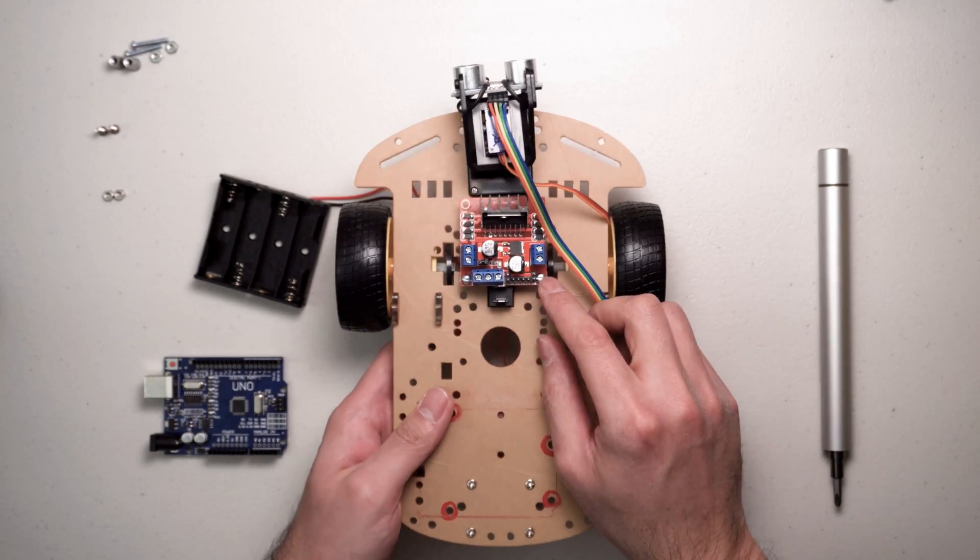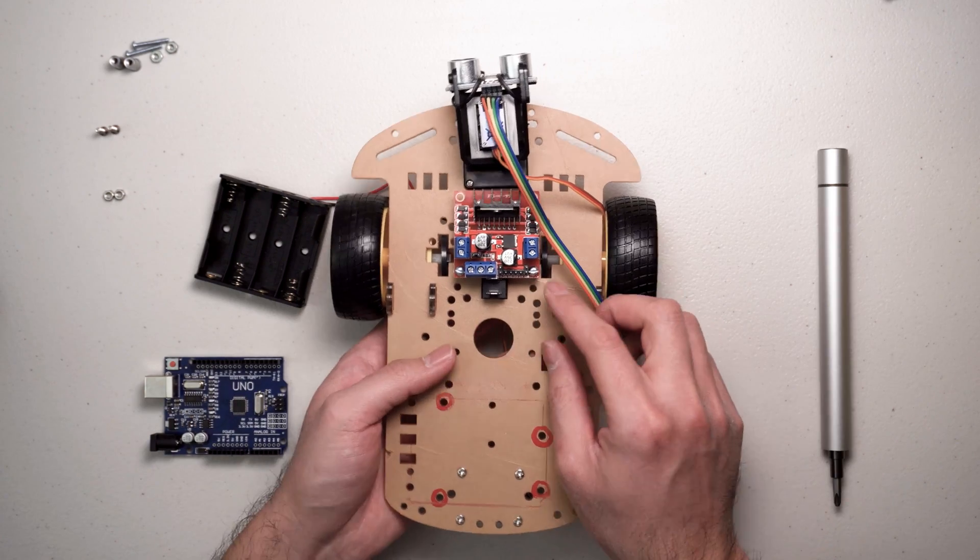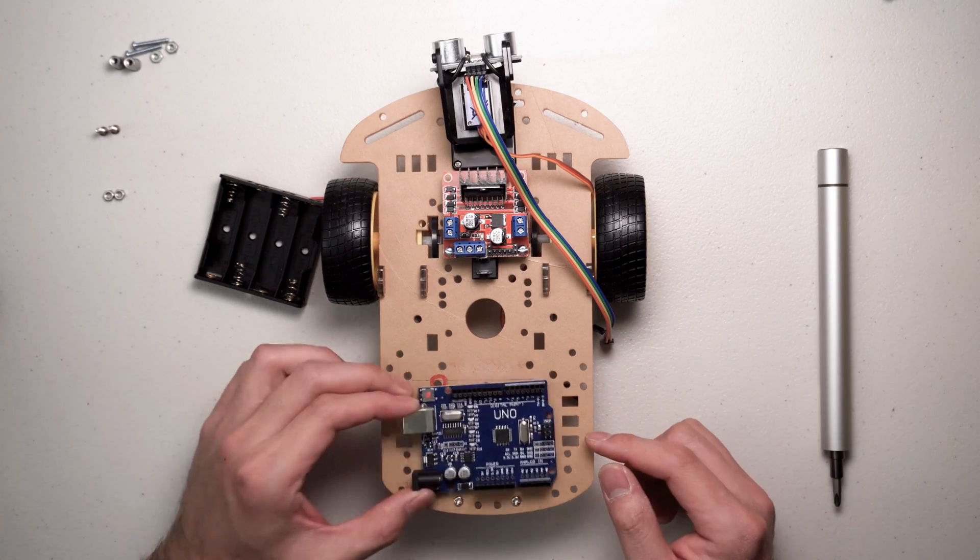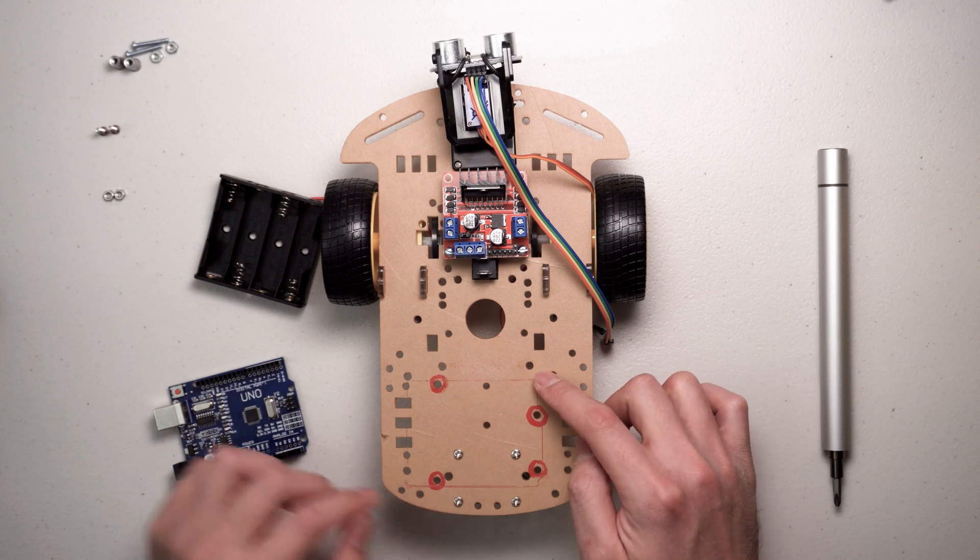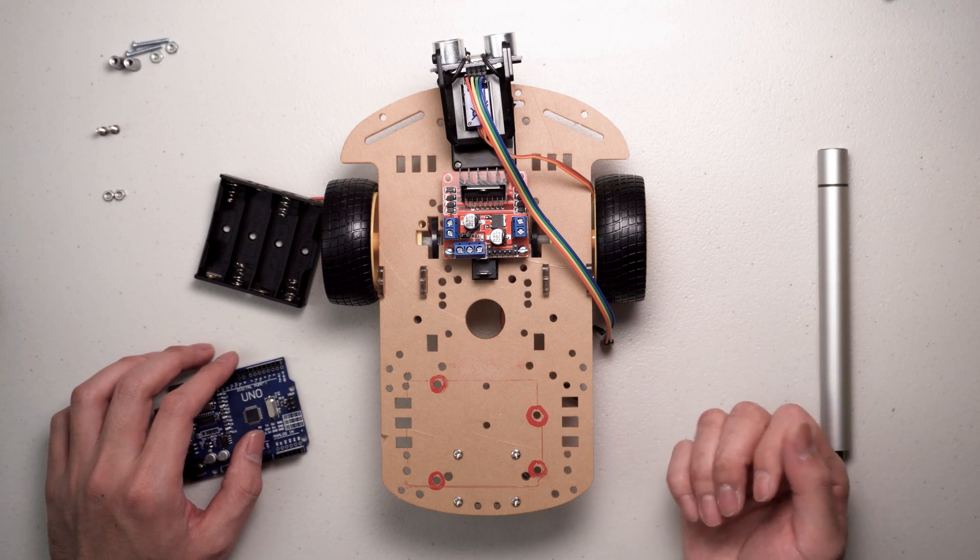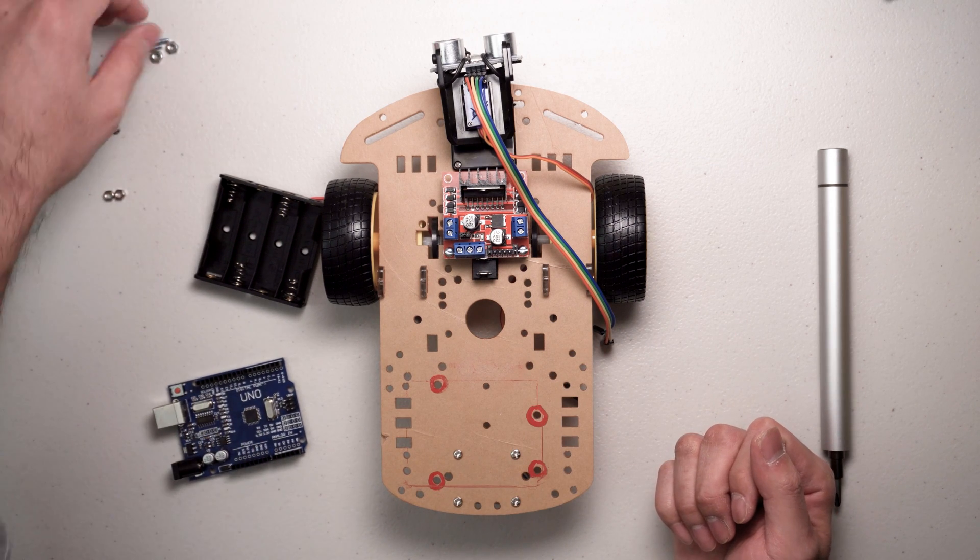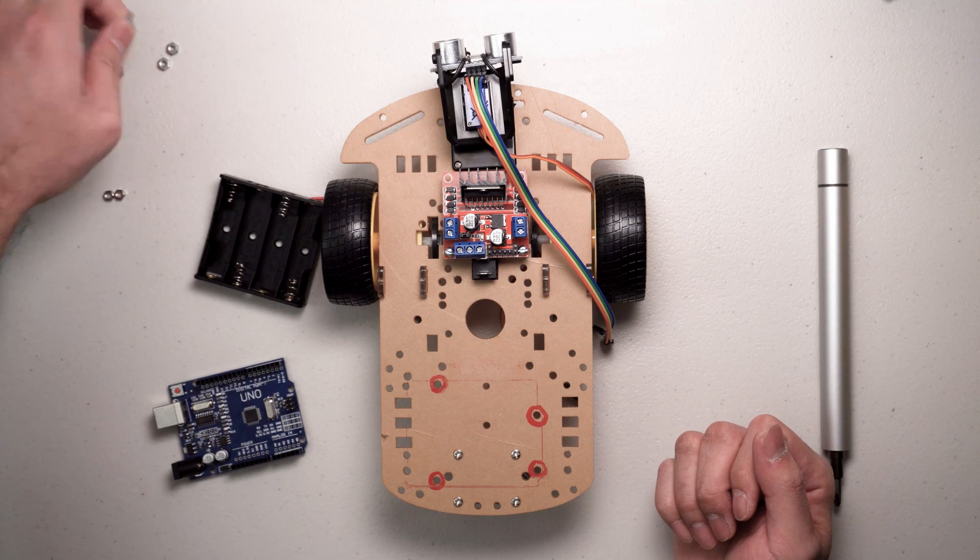L298N is fixed on two holes next to the rocker switch. There are four holes on the back of the board designed for mounting the Arduino. So if your board looks different, you probably have to flip the board and mount the motors on the opposite side.